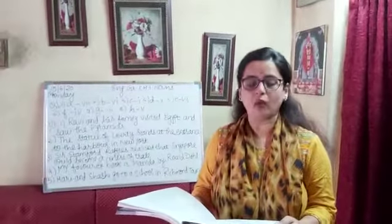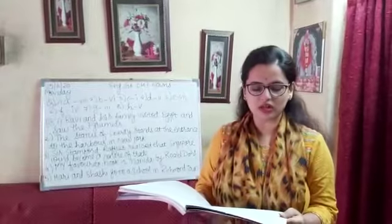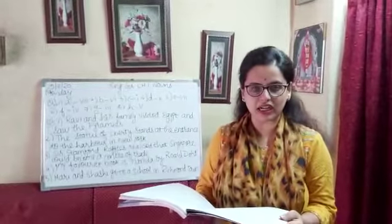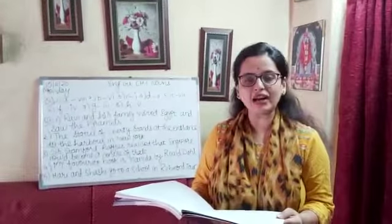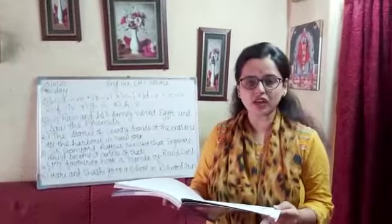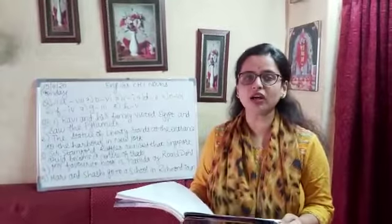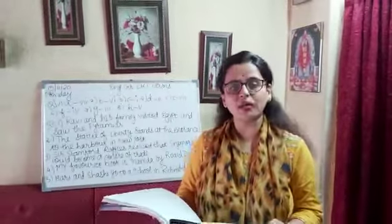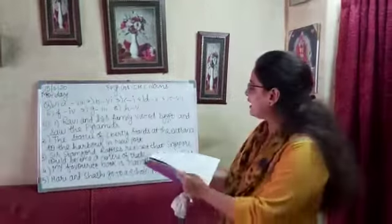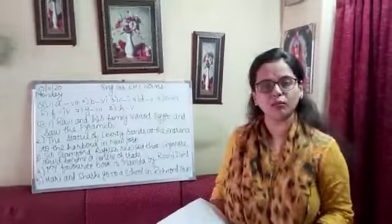Fourth sentence: My favorite book is Matilda by Robert Dann. The proper nouns are Matilda and Robert — circle them. The common noun is book — underline book. Then rewrite the sentence from the board.